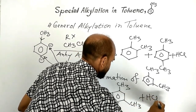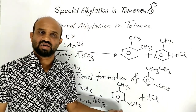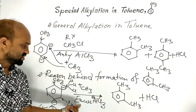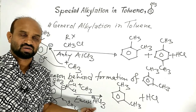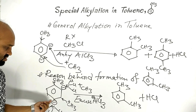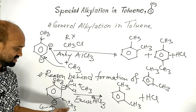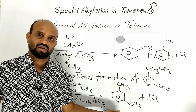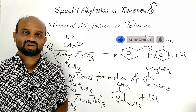The methyl carbocation bonds to the carbon at the meta position to form meta-xylene, and HCl is formed as a byproduct. This is the special alkylation in toluene — the formation of meta-xylene in the presence of excess aluminum chloride. Additional aluminum chloride blocks ortho and para positions, so the methyl carbocation easily attacks the meta position to form meta-xylene.